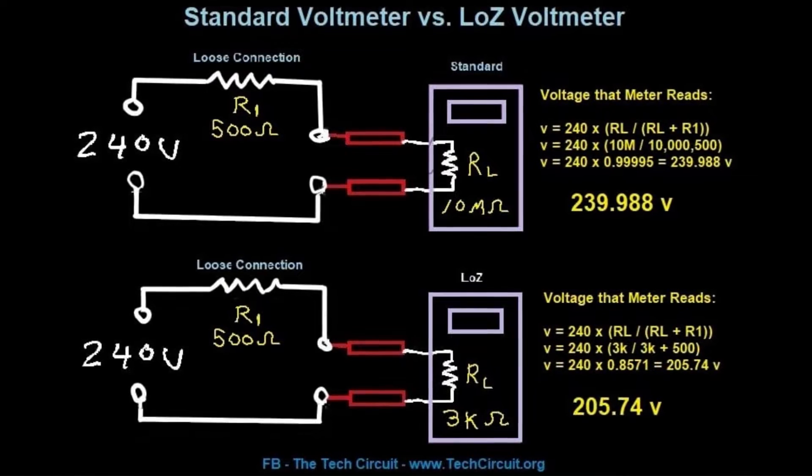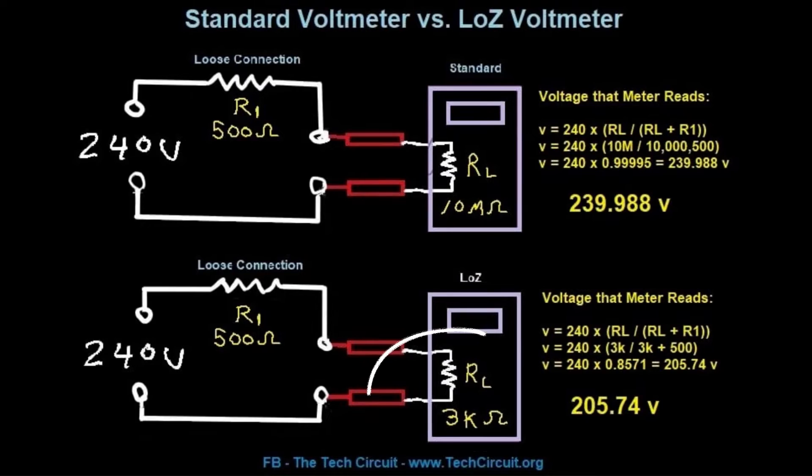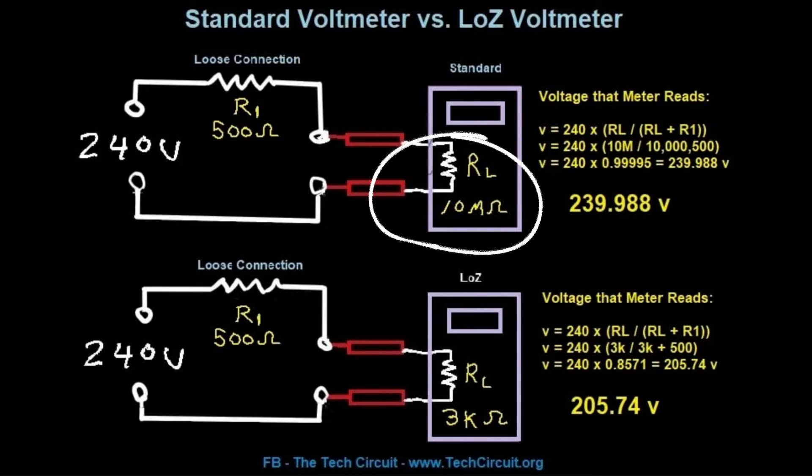Using this mode puts a load on the circuit that you are testing. Normally, the input impedance of a meter is very high and will not affect the circuit you are testing.